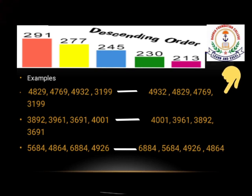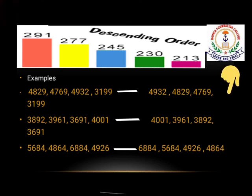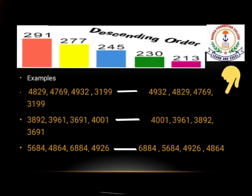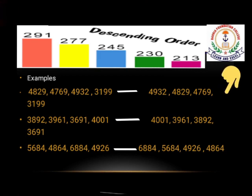Here are some examples of descending order. First is 4829, 4769, 4932 and 3199. Students, in descending order, we arrange numbers from largest to the smallest. So in this example, the largest number is 4932, then comes 4829.